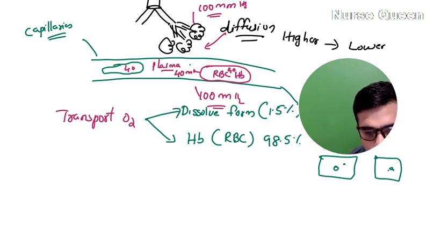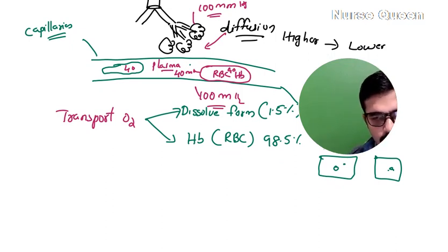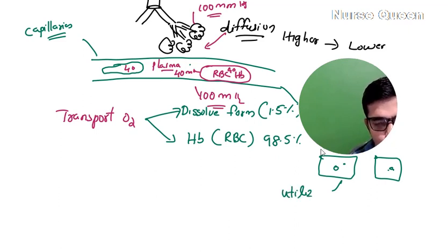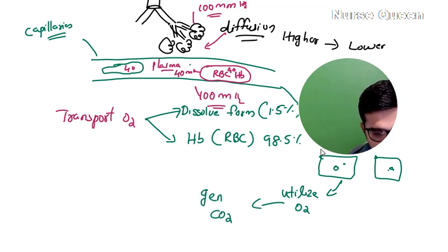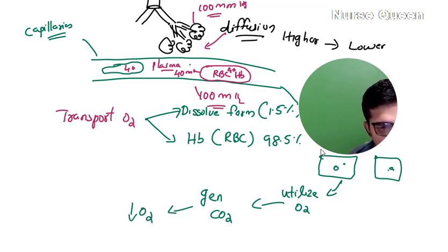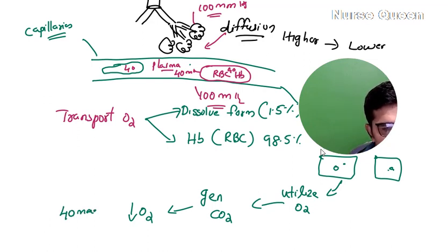In cells, oxygen is used to generate energy. Cells use oxygen, and this generates carbon dioxide. The carbon dioxide pressure in cells is 40 mmHg.